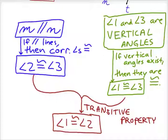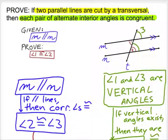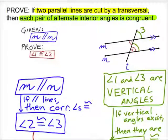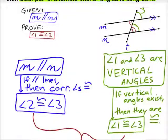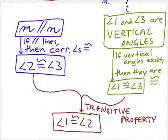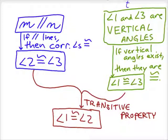Now we've established that angles 1 and 2 are congruent, which is what we set out to prove. Therefore, we've proven the statement: if two parallel lines are cut by a transversal, then each pair of alternate interior angles is congruent. That's a great proof. Nice job.